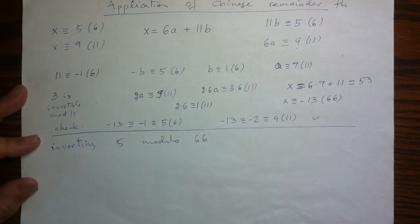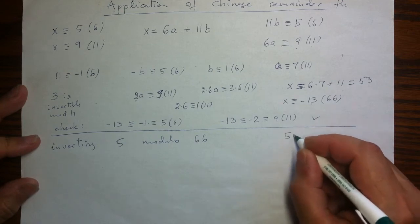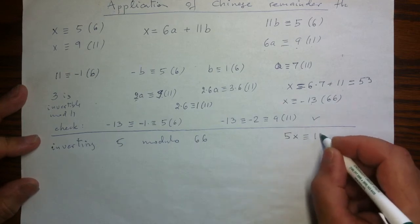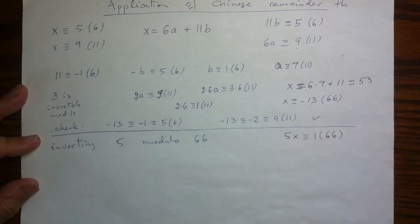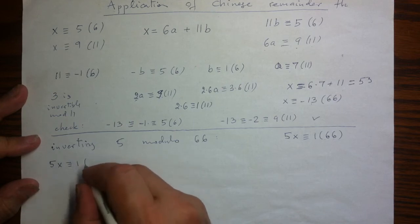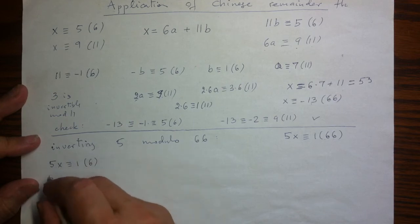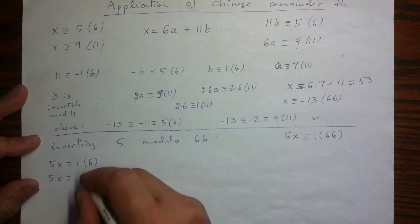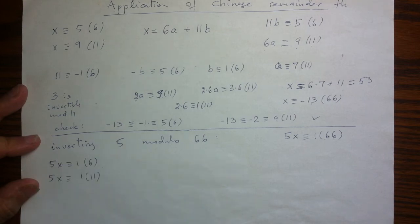I need to solve congruence 5 times something is 1 mod 66. Need to find the inverse. Since 66 is a product of 2 coprime things, I can use a Chinese remainder trick. So I can instead solve this inverse congruence mod 6 and mod 11 separately and then combine solutions.